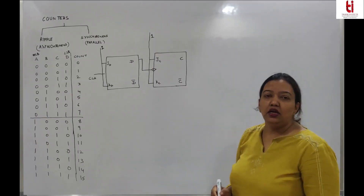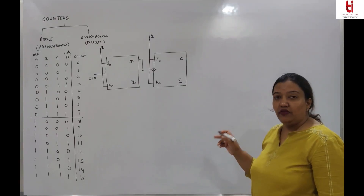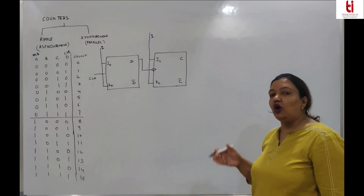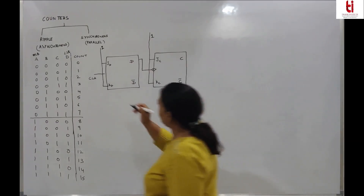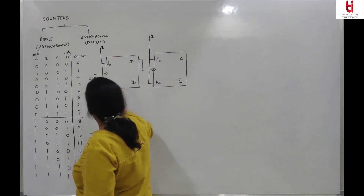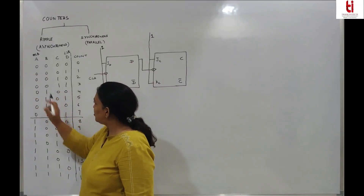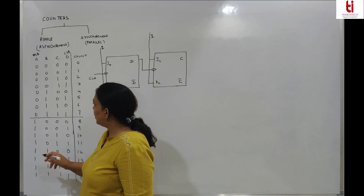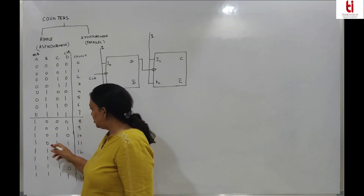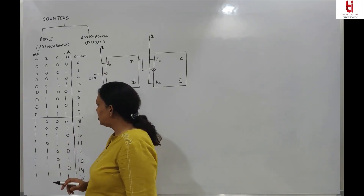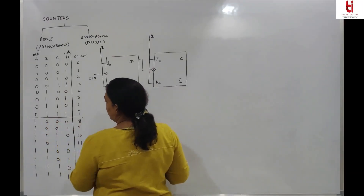The output of D is fed as a clock to the next flip-flop, because they are not in synchronization with the clock. When they are not synchronized, the output of one flip-flop triggers the next flip-flop. We should have a negative edge triggered flip-flop. When this goes from 1 to 0, the next flip-flop gets toggled.